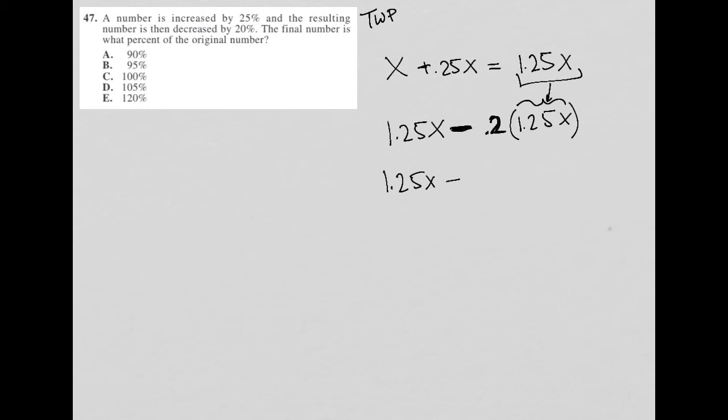0.2 times 1.25 is 0.25. So 1.25X minus 0.25X is equal to just X. Okay, so that's interesting. So my resulting number here is the same as my initial number.